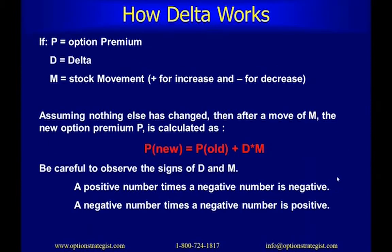Here's a formula for how delta works. Using P for option premium, D for delta, and M for stock movement (positive for increase, negative for decrease), and assuming nothing else changes, the new premium is calculated as: new premium equals old premium plus delta times the movement. Be careful with the signs — delta could be positive or negative, and the movement could be positive or negative. A positive times a negative is negative; a negative times a negative is positive.